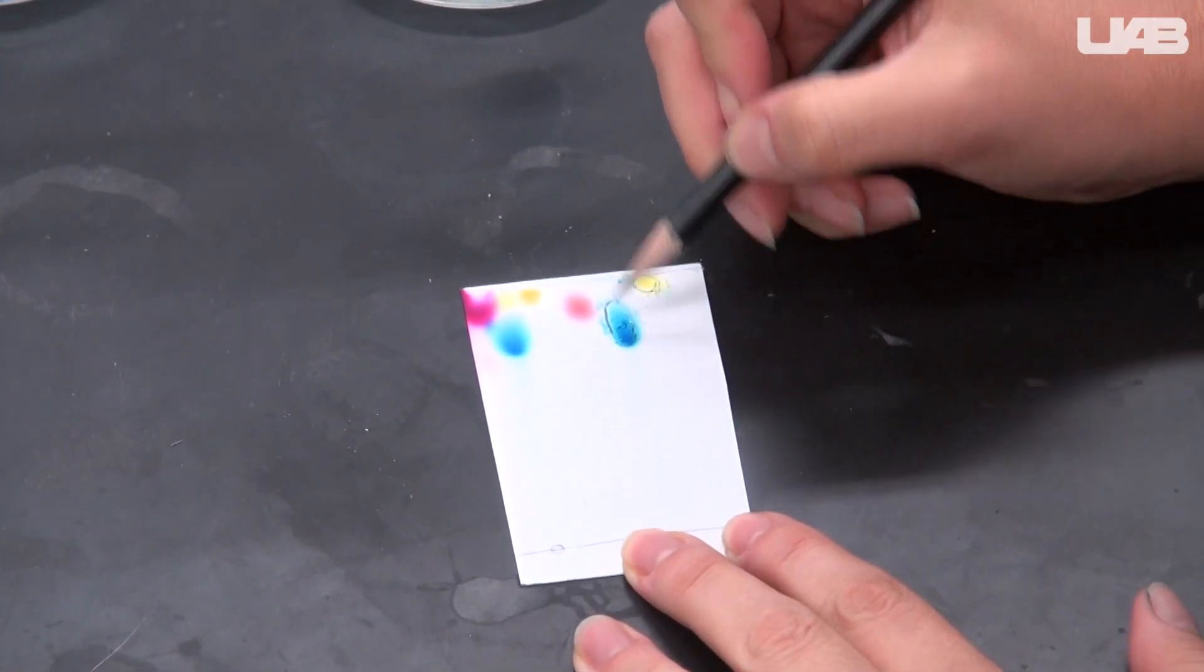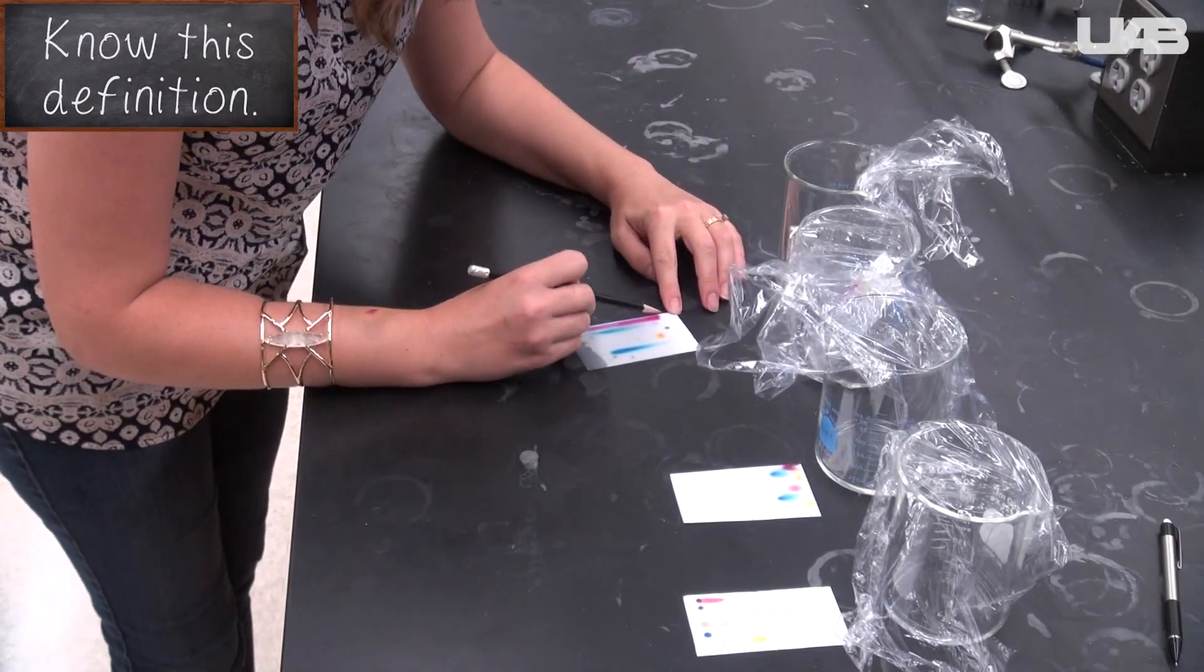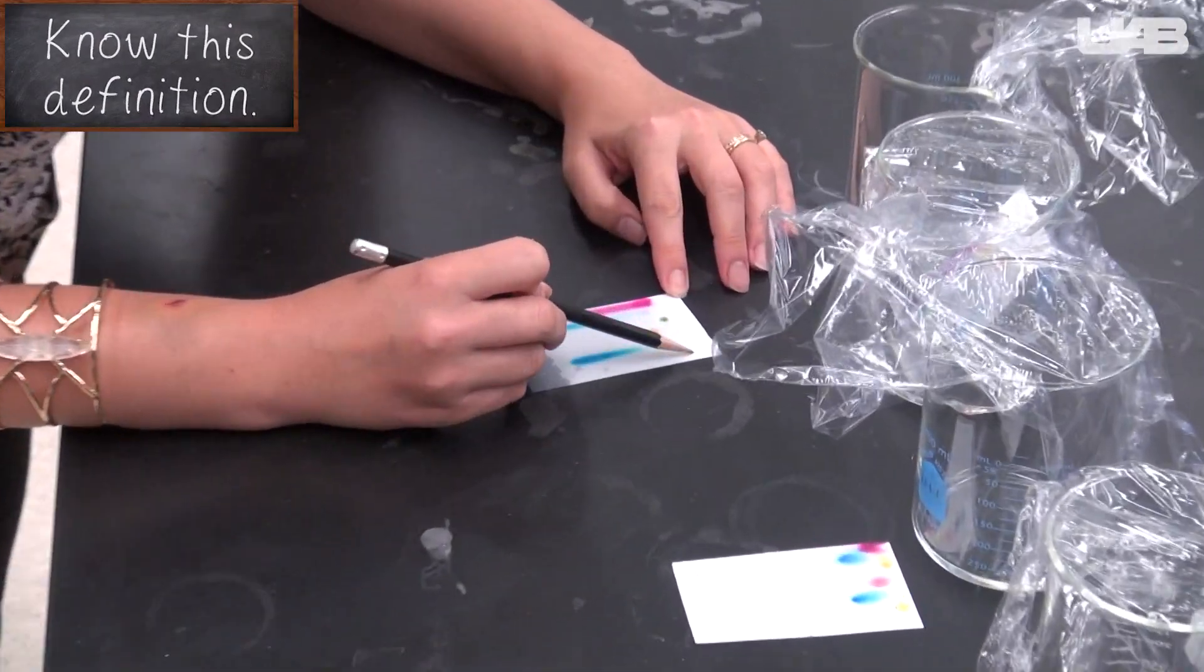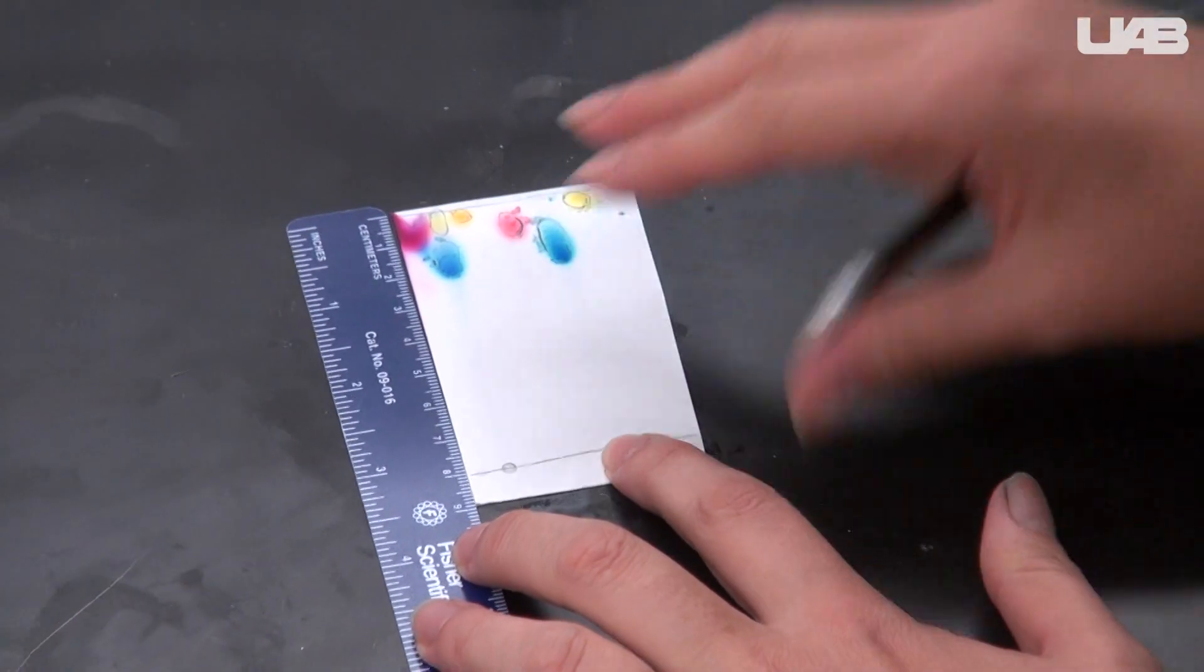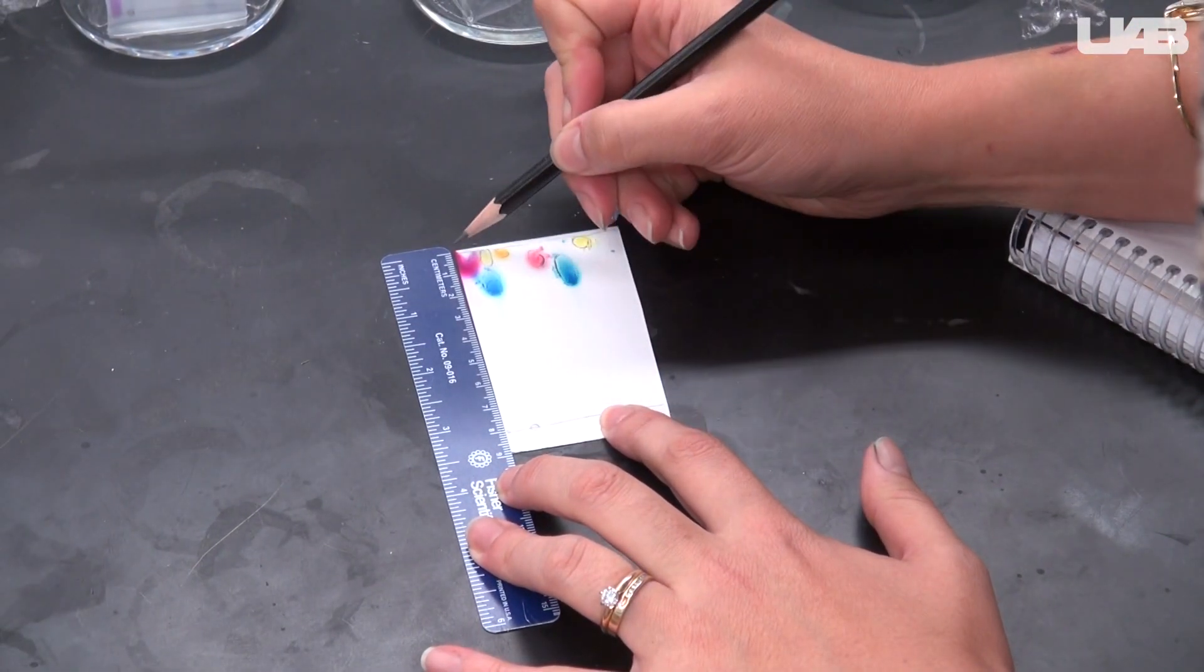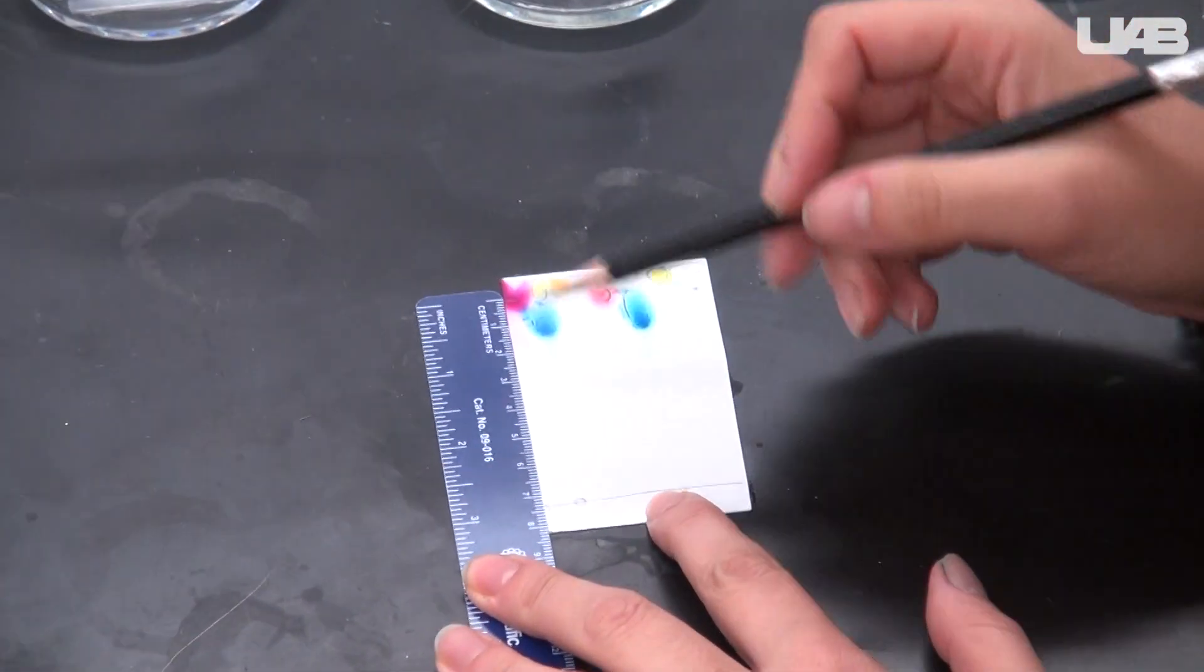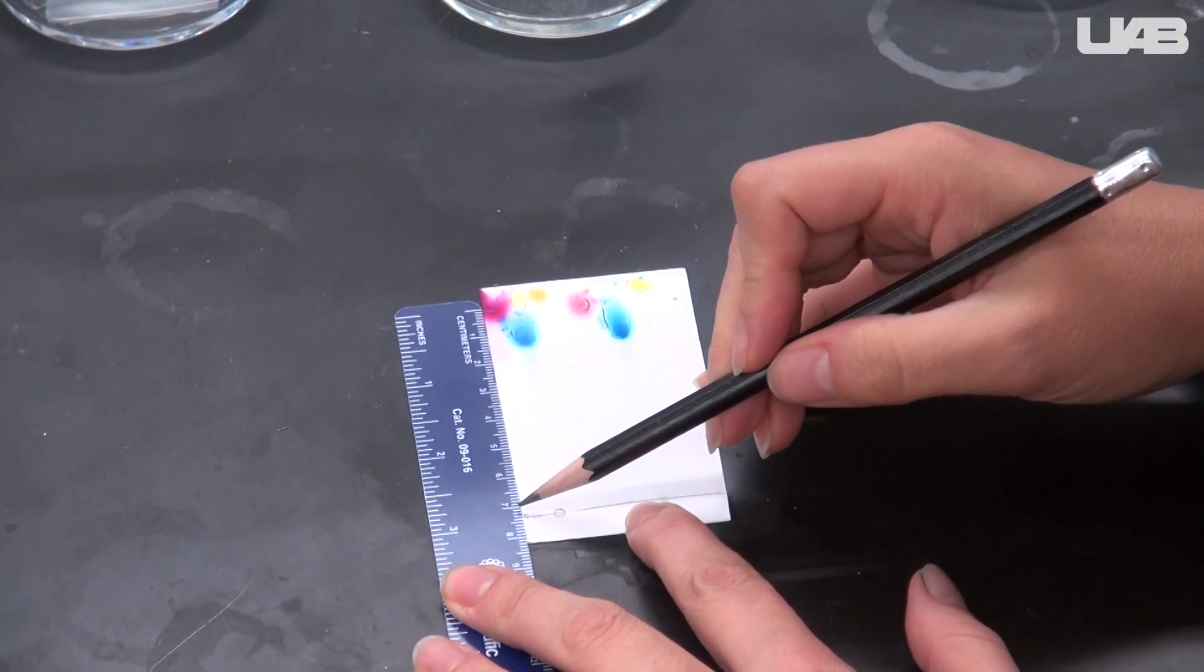Use your pencil to mark any areas of color that are faint or hard to see. Mark the solvent line, the highest level that the solvent reached on the plate. Measure from the line that you made along the bottom in the beginning up to the solvent line and record this value. Then measure between the line you made in the beginning and the darkest part of each spot and record these values.